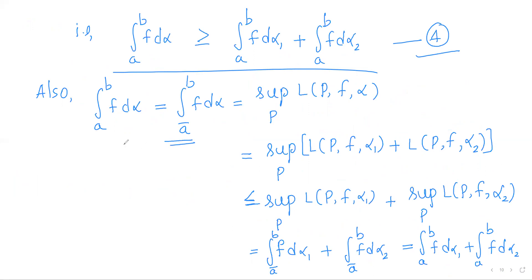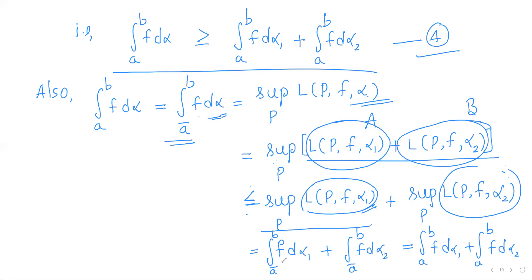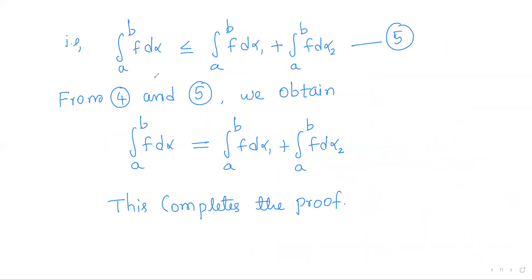On the other hand, consider the lower Riemann-Stieltjes integral of f with respect to α, defined as the supremum of all lower RS sums with respect to α. Since L(P, f, α) = L(P, f, α₁) + L(P, f, α₂), we take the supremum of this sum. By the lemma, sup(A + B) ≤ sup(A) + sup(B), so the lower RS integral of f w.r.t. α is ≤ the lower RS integral w.r.t. α₁ plus that w.r.t. α₂, which equals ∫f dα₁ + ∫f dα₂.